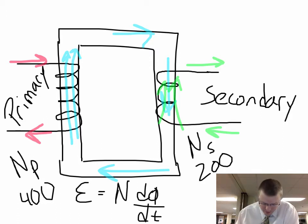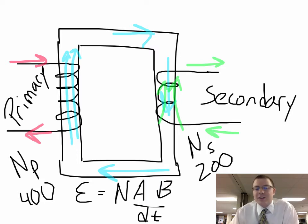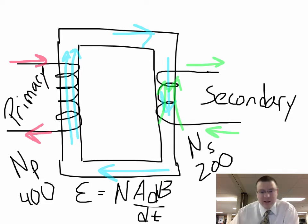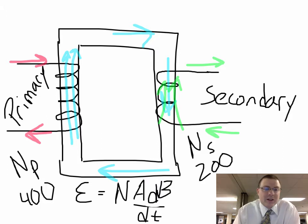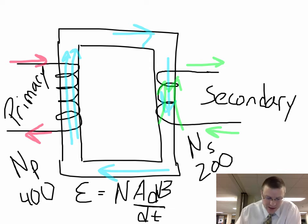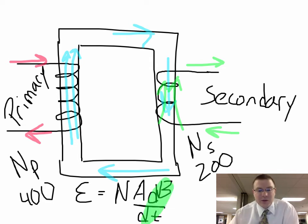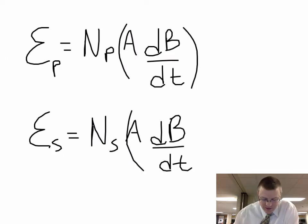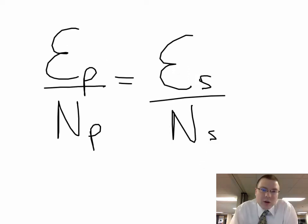According to Faraday's law, that induced voltage is dΦ/dt. Flux is the number of turns, the area, and the magnetic field. In this case, the area is not changing for either coil, but what is changing is the magnetic field as the primary coil is hooked up to a generator with alternating currents going back and forth. Since the same dB/dt is happening on both the primary and secondary coil, we can set them equal. That gives us: voltage in the primary coil over the number of turns in the primary coil equals voltage in the secondary coil over the number of turns in the secondary coil.